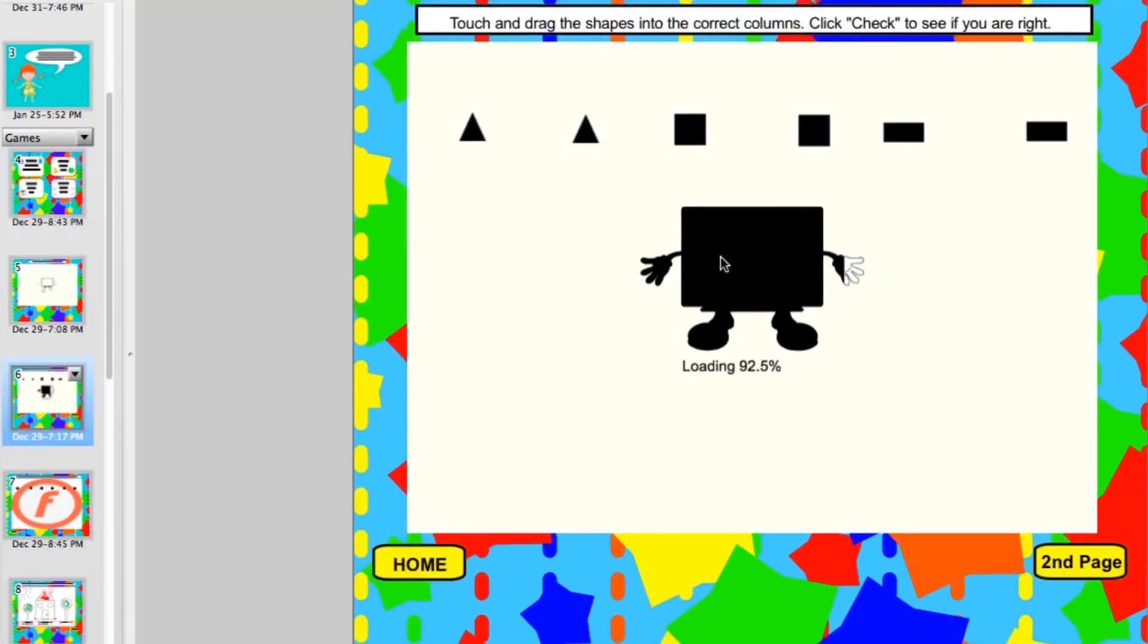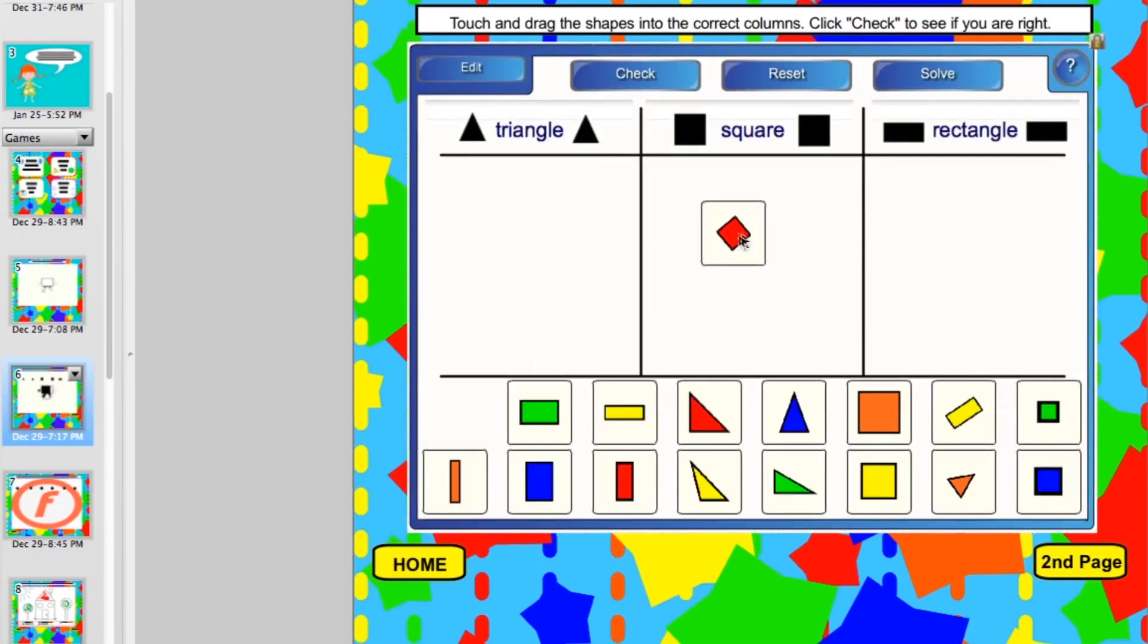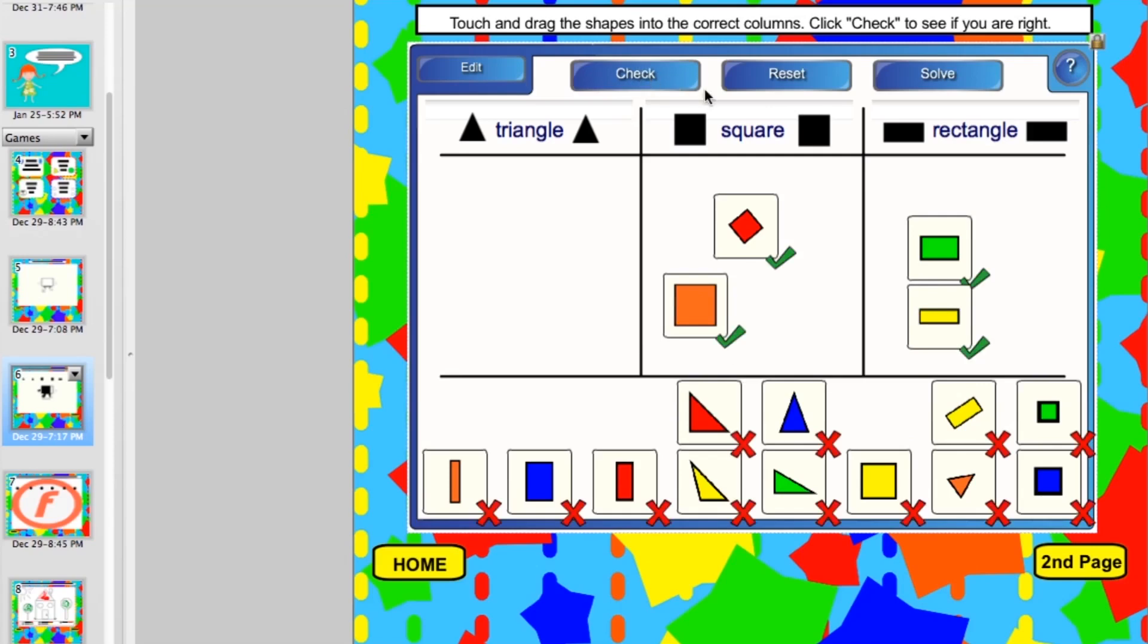In the next game students will sort shapes for triangles, squares, and rectangles to help them with different sizes and angles of these shapes. Then they click on check and they will see whether they're right or wrong.